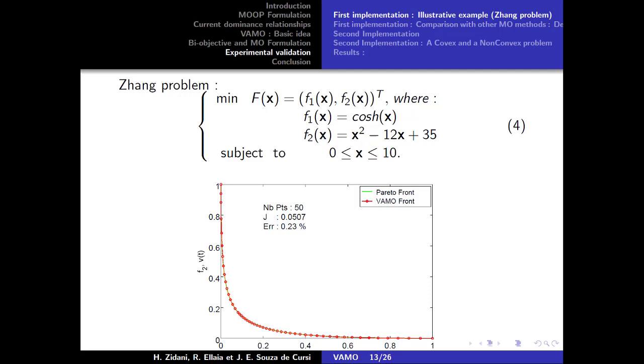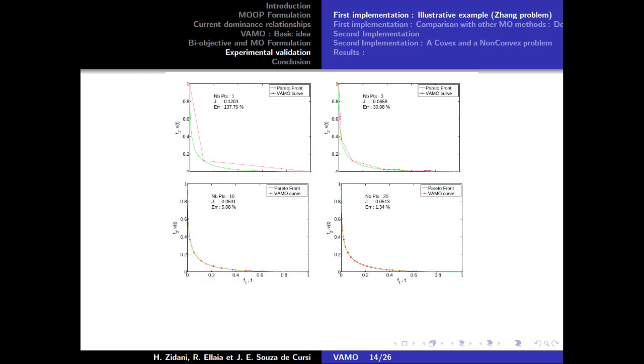The first problem is a single variable problem. It's used to illustrate the VAMO method and show the progress of the Pareto front construction. Solving this problem leads to the Pareto front of the figure. We observed that the points generated are rather focused on the curvature of the Pareto front located between 0.07 and 0.4.